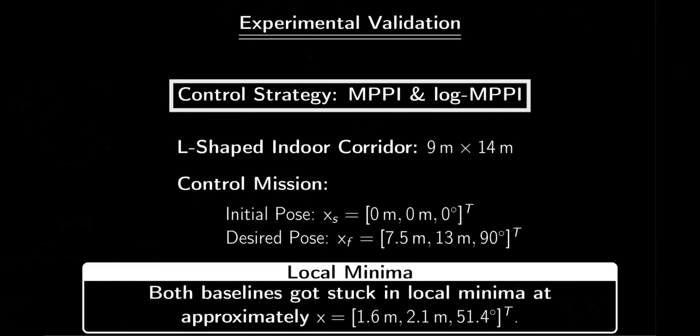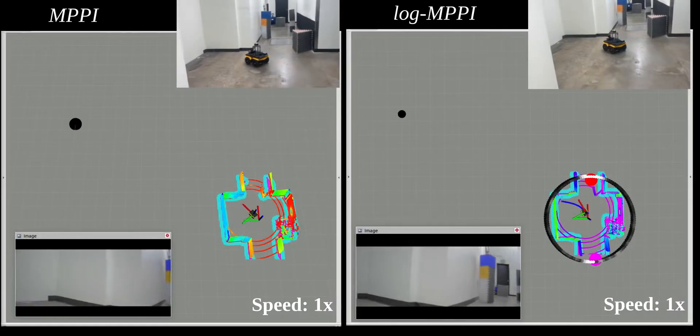However, the two baselines failed to complete the control mission due to getting trapped in the first edge of the L-shaped environment.